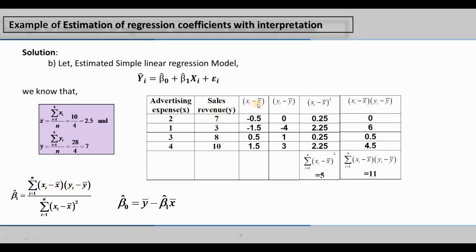Now we calculate xi minus x-bar. X-bar is 2.5, so: 2 minus 2.5 equals minus 0.5; 1 minus 2.5 equals minus 1.5; 3 minus 2.5 equals 0.5; and 4 minus 2.5 equals 1.5. Next, y-bar is 7, so we calculate yi minus y-bar for each observation.